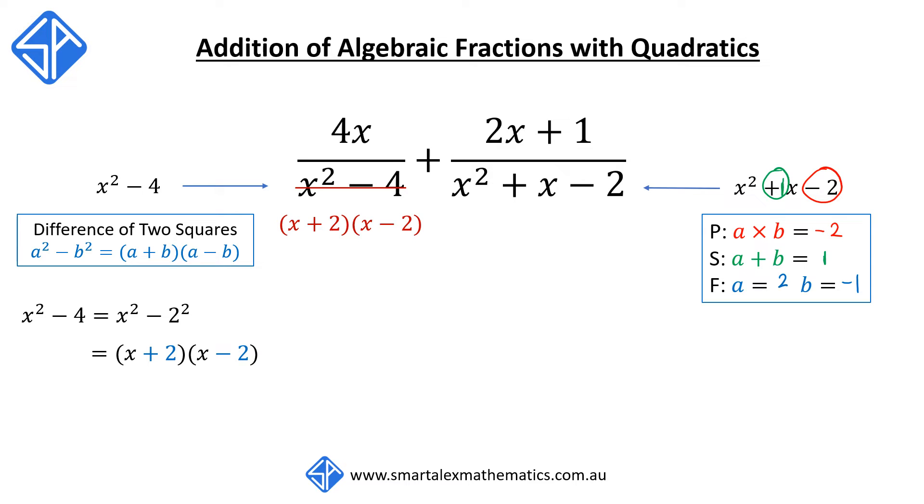Once we have these values of a and b, we can now rewrite x squared plus x minus 2 as x plus 2 times x minus 1. And so this expression can now be replaced by x plus 2 times x minus 1.